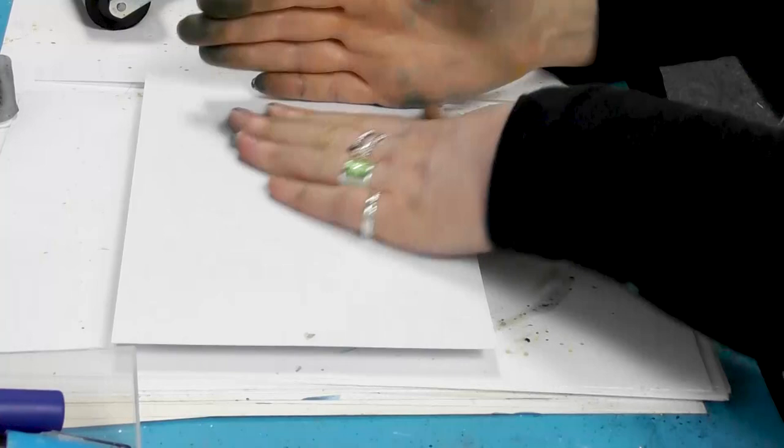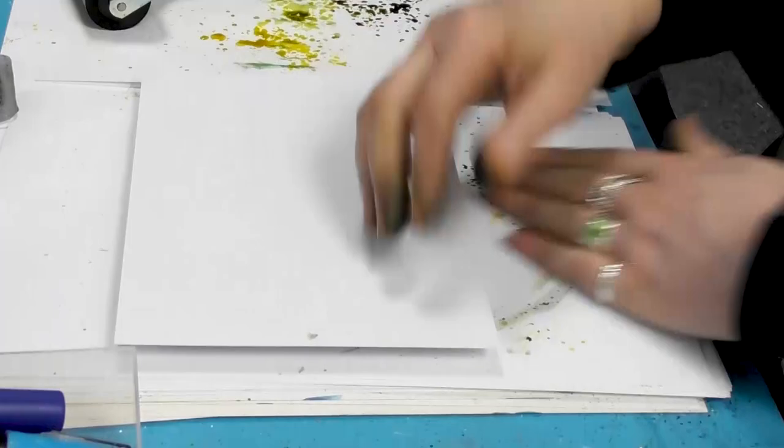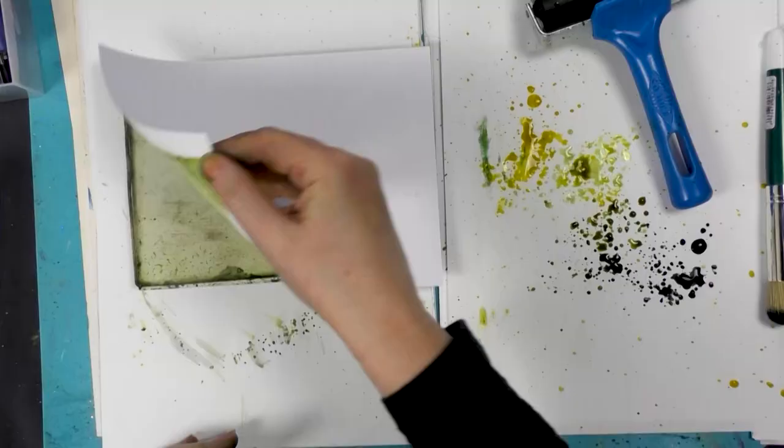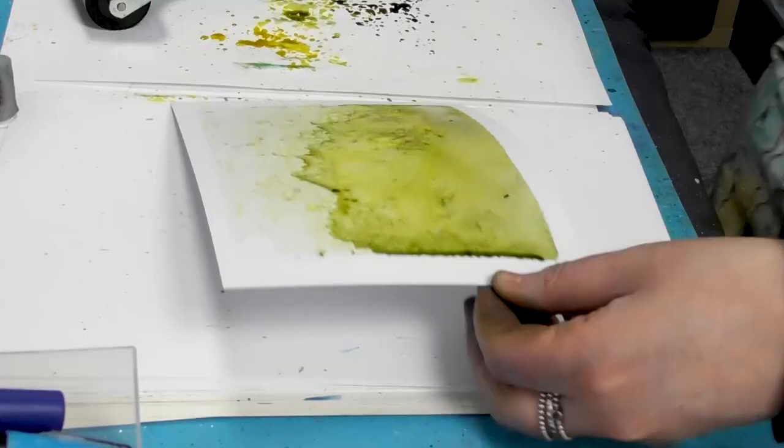I'm going to pop a little bit of the moss green in there as well. So I've got the multiferous card here. I'm going to pop that over the top, smooth it over, and there we've got our lovely background. Let's just dry this off.